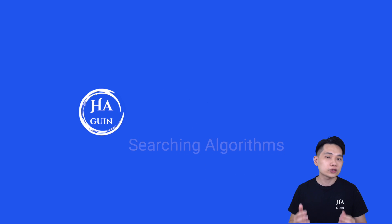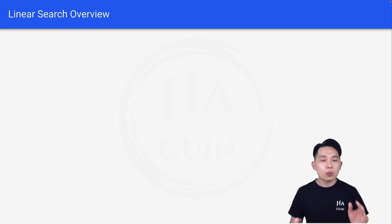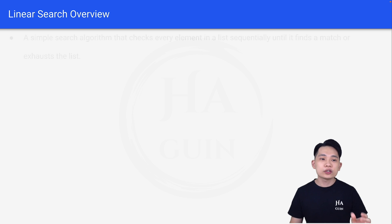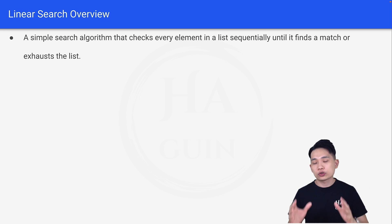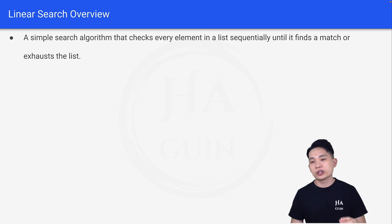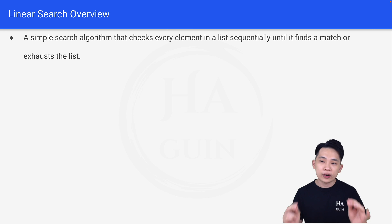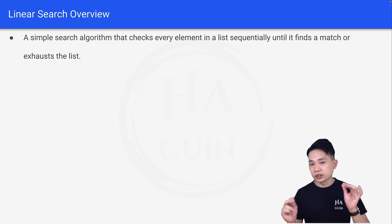Hi there. Welcome back. Let's talk about searching algorithms. First of all, what is linear search? Linear search is a simple search algorithm that checks every element in the list sequentially until it finds a match or exhausts the list.